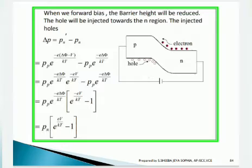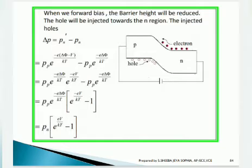In forward bias, the depletion region is very narrow and holes are injected towards the n-region. The injected holes are represented as Δp = pn' − pn. Substituting the known values of pn' and pn, taking common terms outside, we get: Δp = pp · e^(−eΔφ/kT) · e^(eV/kT) − 1. Since pp · e^(−eΔφ/kT) = pn from the previous result, this simplifies to: Δp = pn · (e^(eV/kT) − 1).